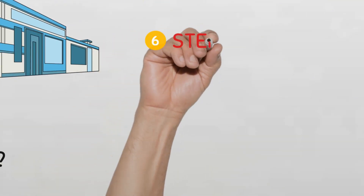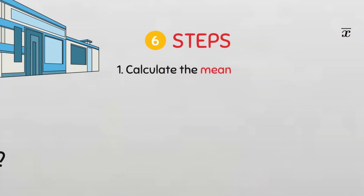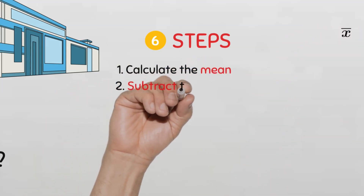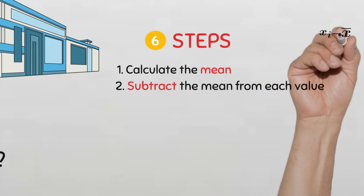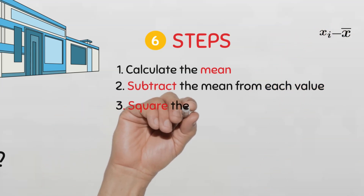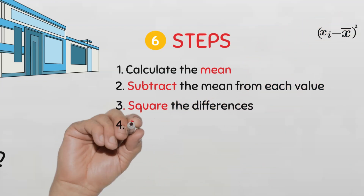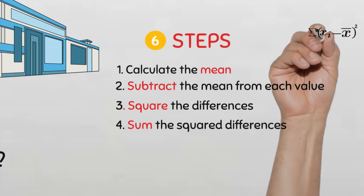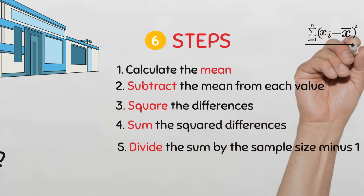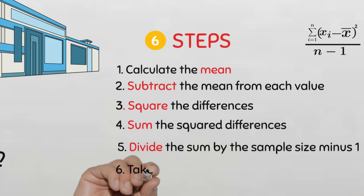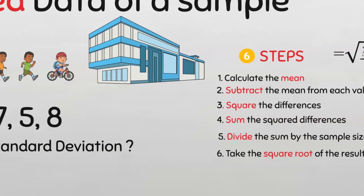There are six steps according to this formula. The first is to calculate the mean of the sample, denoted as X bar. Then we subtract the mean from each value in the data set to get the deviations from the mean. Next, we square each of the deviations to get the squared deviations from the mean. Then we sum the squared deviations together, divide the sum by the number of individuals in the sample minus one, and finally we find the square root, which gives us the standard deviation denoted as capital letter S.